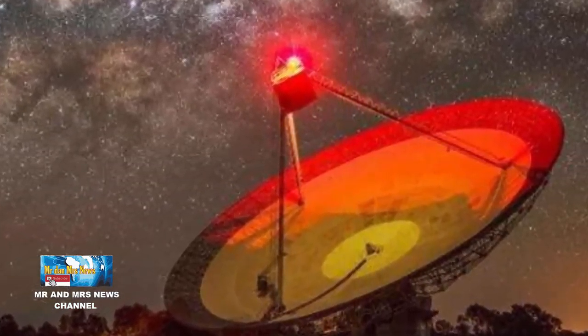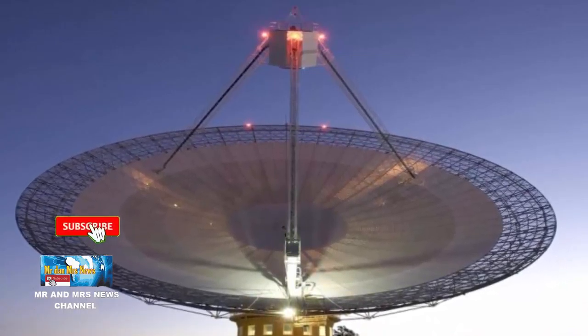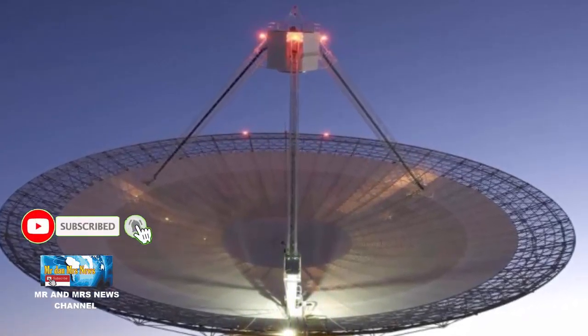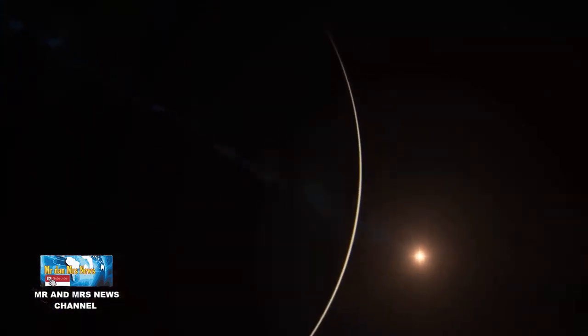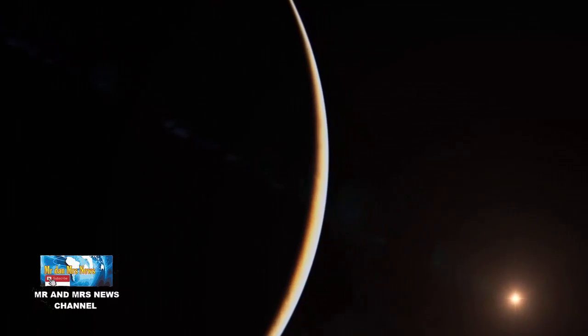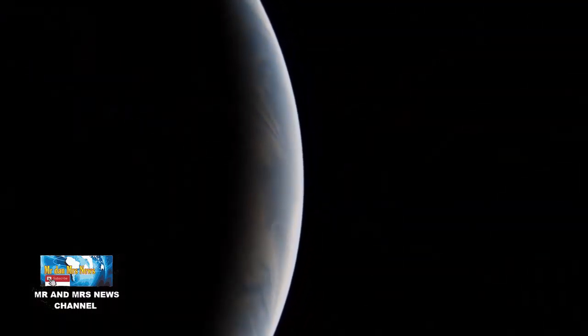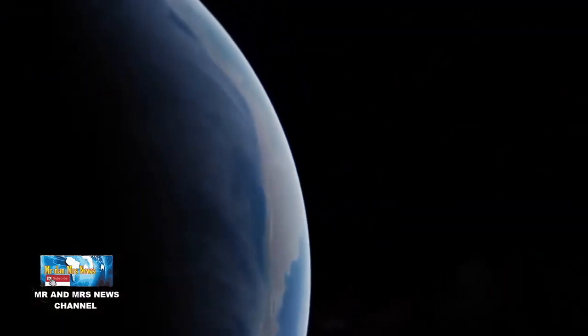Frekuensi ini penting karena menurut peneliti, pita gelombang radio ini biasanya tidak berasal dari alat buatan manusia dan satelit. Tapi, peneliti tidak mau langsung bersemangat melihat penemuan ini. Pasalnya, ada kemungkinan sinyal ini tidak datang dari kehidupan alien, melainkan sumber yang tidak begitu menarik seperti komet atau awan hidrogen.